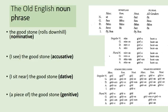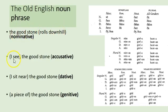German still has the same four cases that Old English has: nominative, accusative, dative, and genitive. The nominative is the case used for the subject and the subject predicate. For example, 'I am a teacher' — 'teacher' is predicating something about the subject. So 'I' and 'teacher' are both nominative in an inflected language like Old English. When we say 'the good stone rolls downhill,' 'the good stone' is in the nominative case.